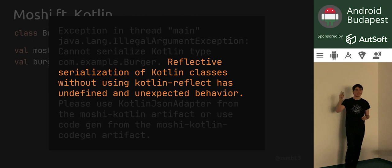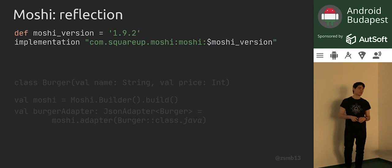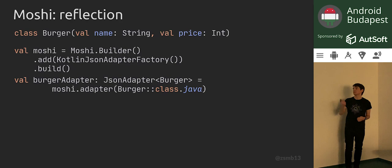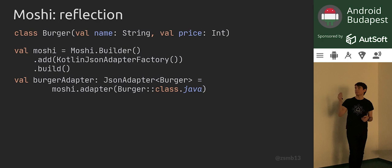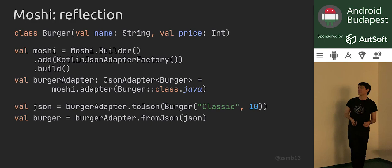To do that, it tells you exactly what to do in the same error message: use the Moshi Kotlin artifact and include a specific Kotlin adapter factory from that artifact. So you add the moshi-kotlin artifact to your build file, then add this KotlinJsonAdapterFactory on the Moshi builder. This is actually the purpose the builder serves — you can attach custom adapters to it. With this in place, you could serialize a Kotlin burger into JSON and parse it back.